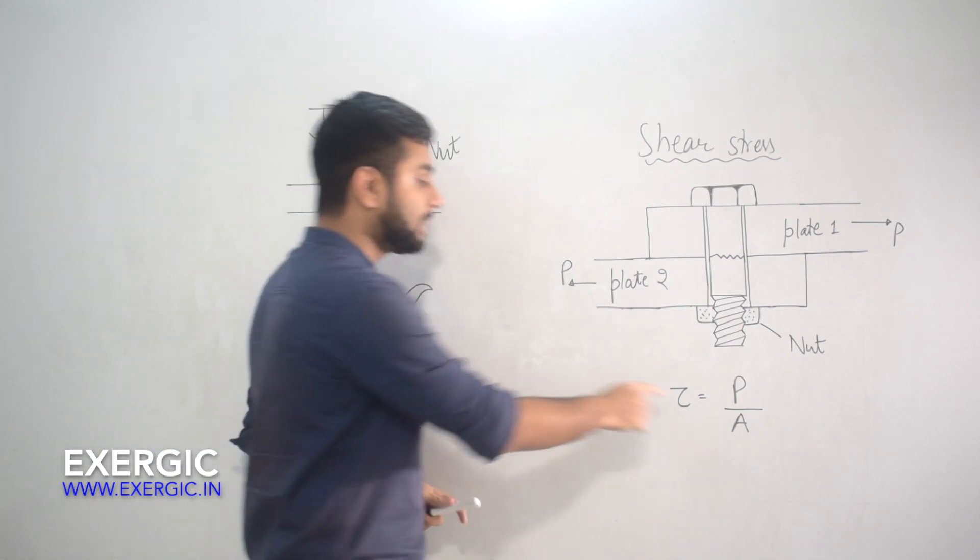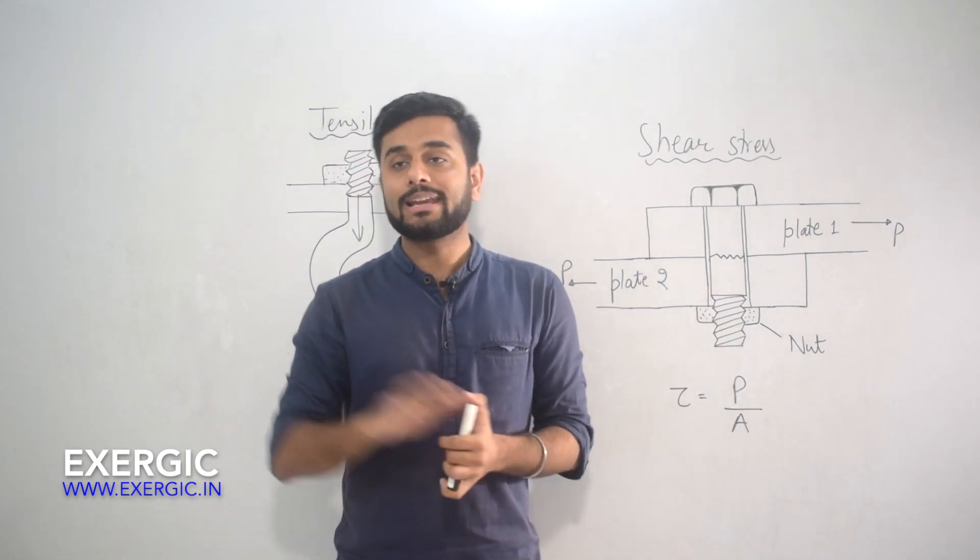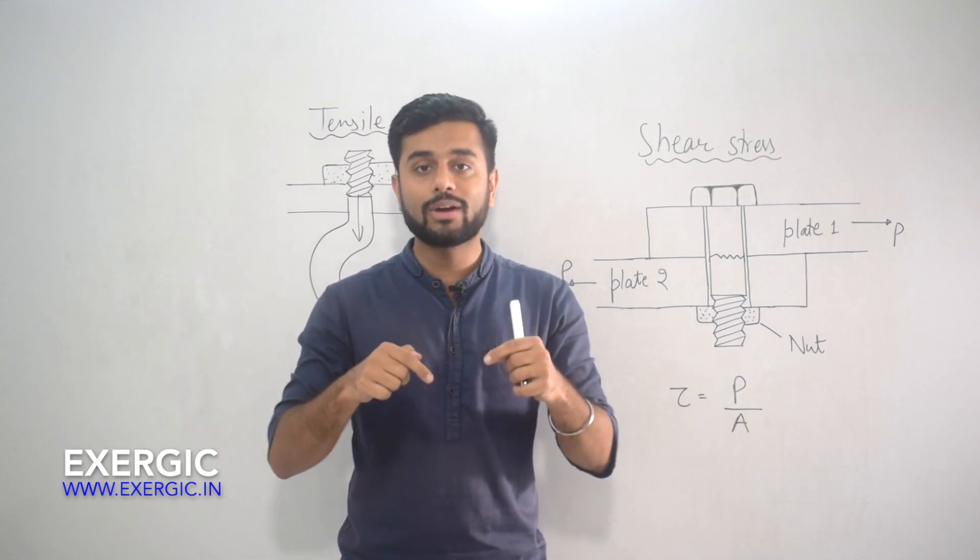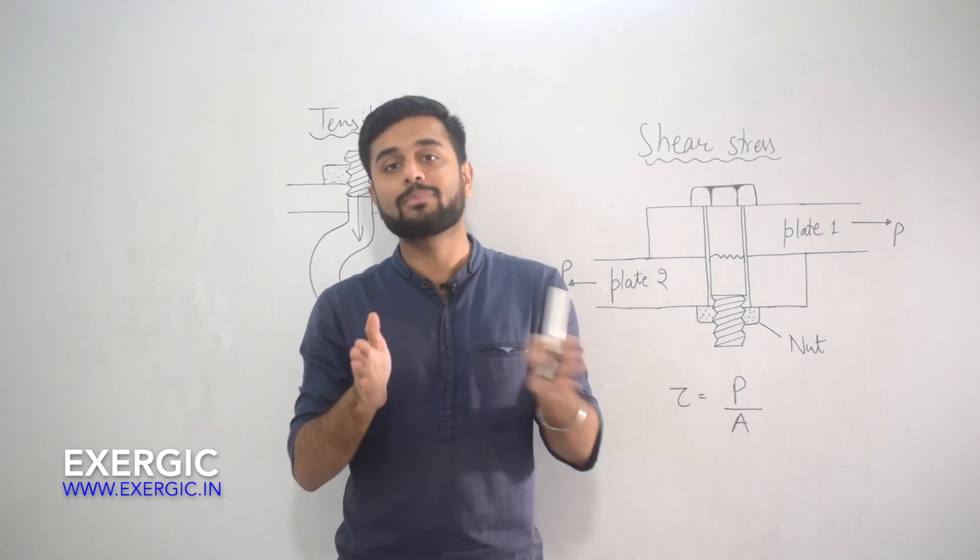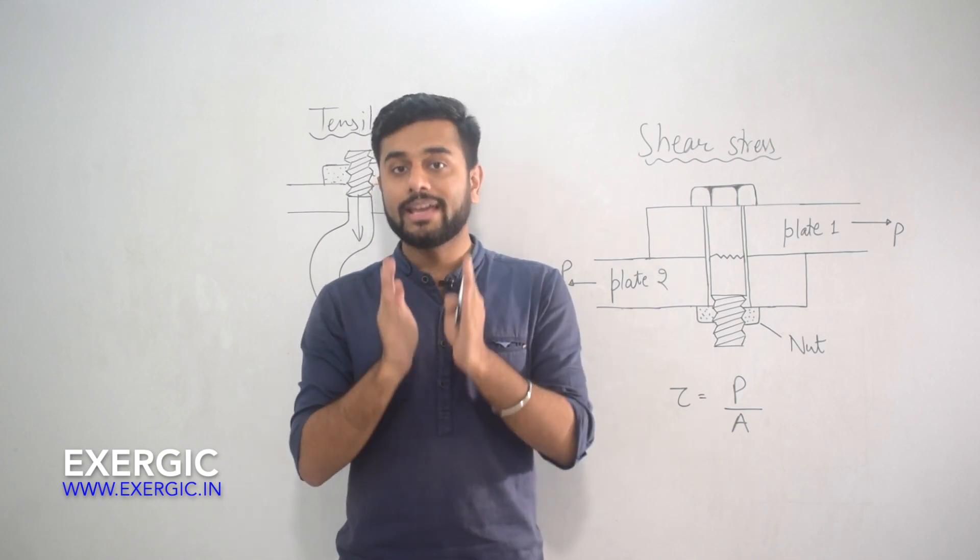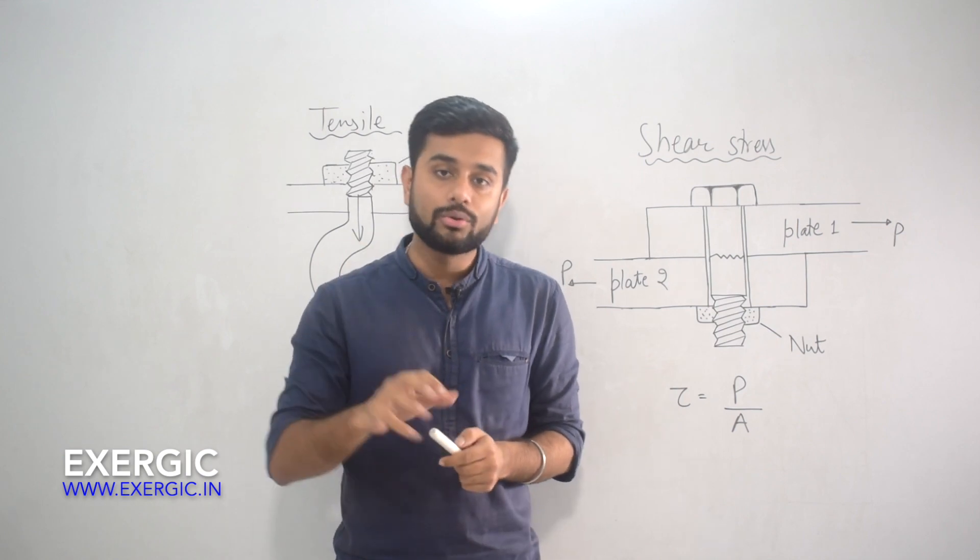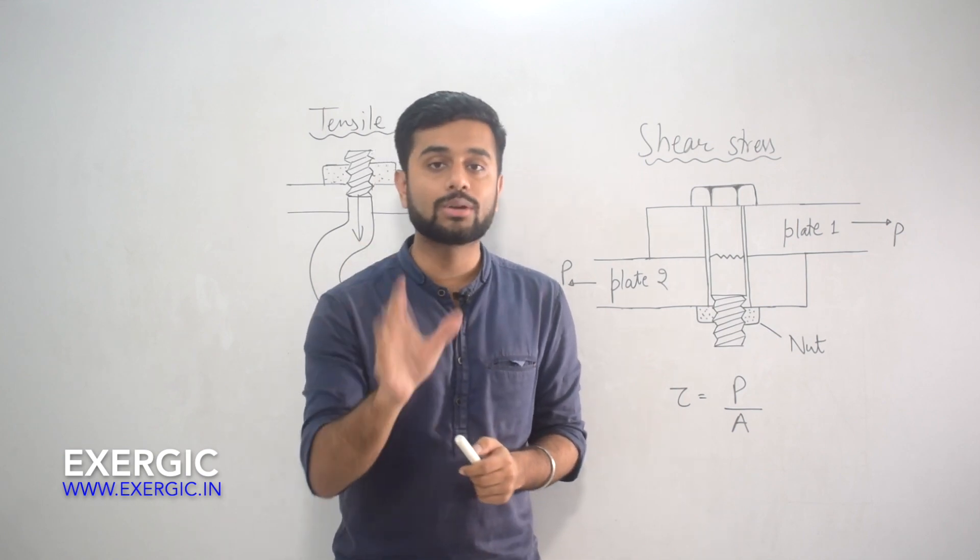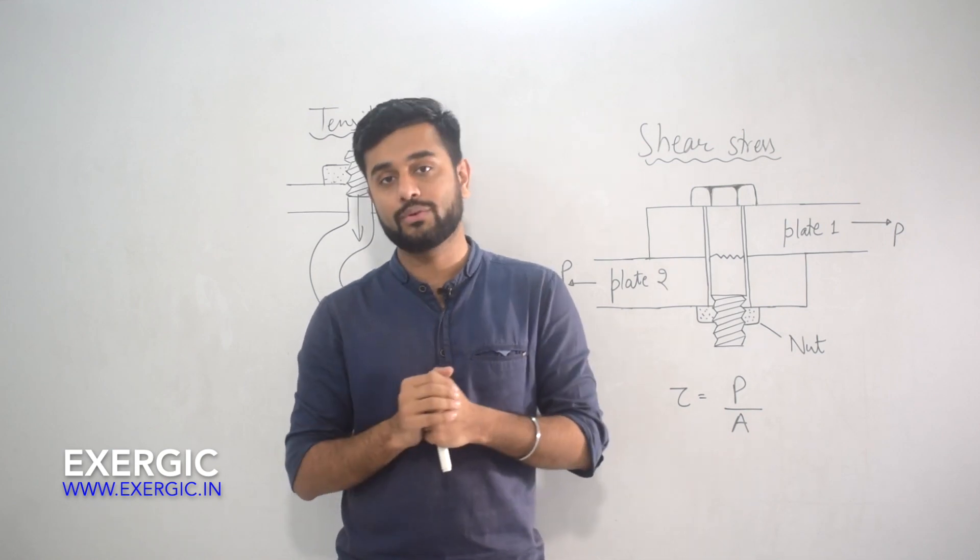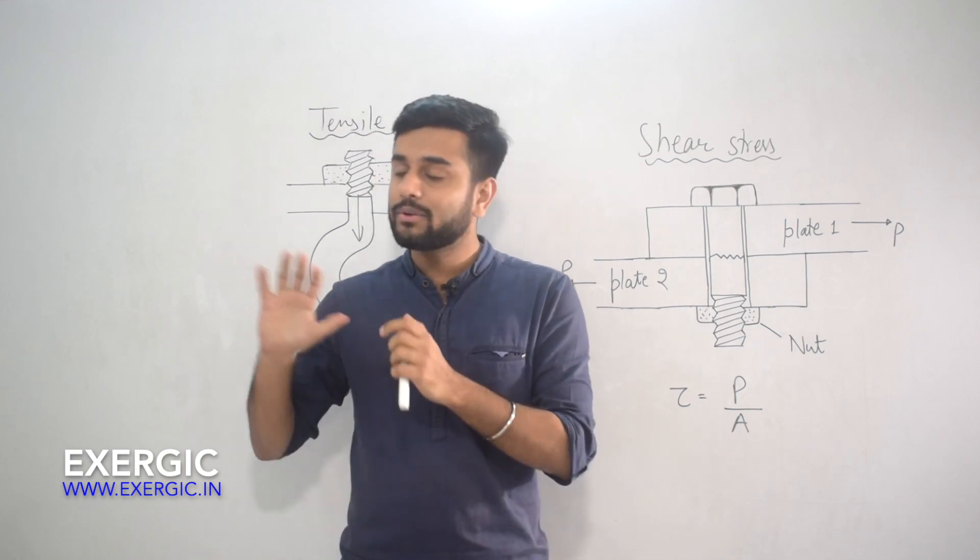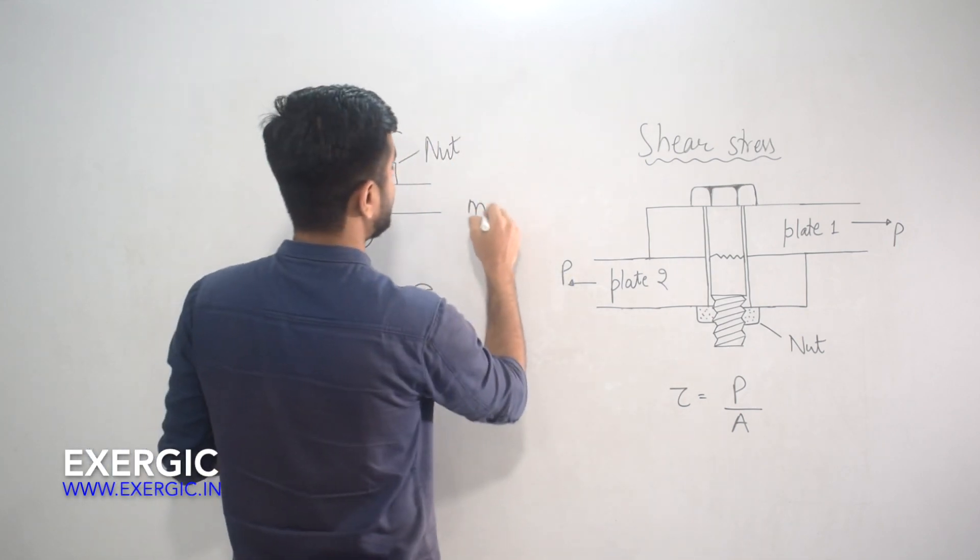But what area to take? I think this is a major confusion among aspirants, because unlike other types of joints, here you have more than one type of diameter. Hence, more than one type of area is possible: the area decided by the major or nominal diameter, or the pitch diameter, or the core diameter which is also called minor diameter.